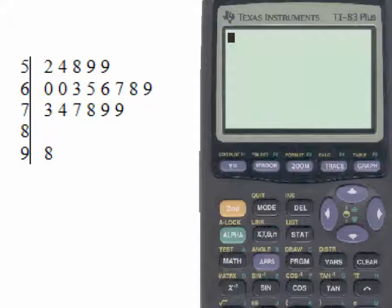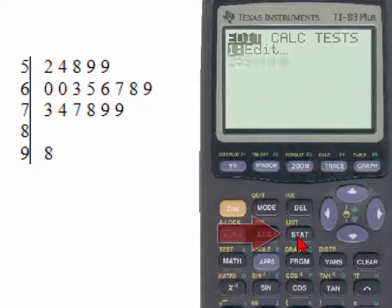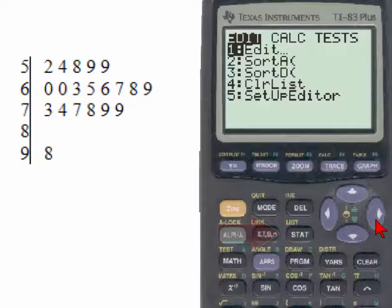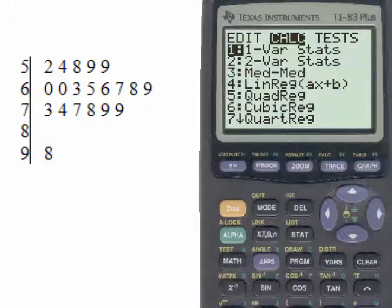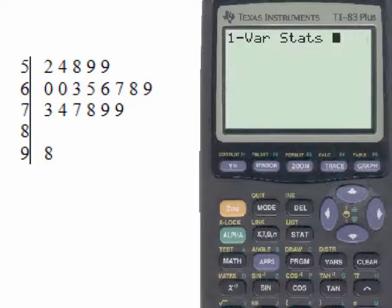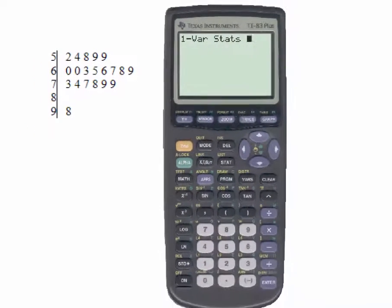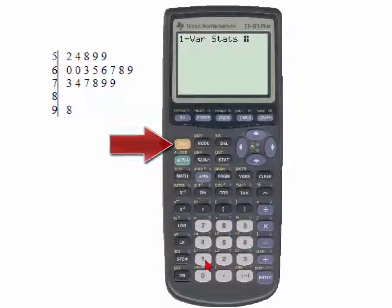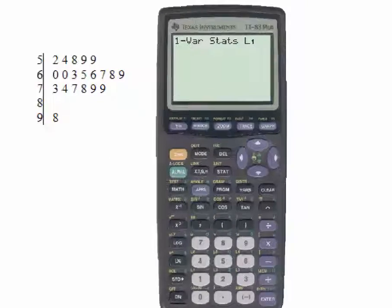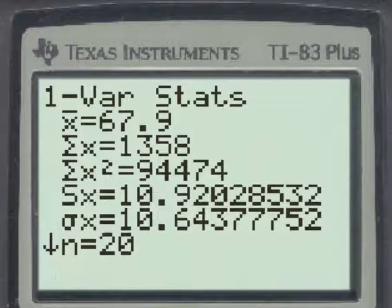Here we are on the home screen. We'll look at the values for the mean, the median, the standard deviation by going to the stat key and then to the calculate menu and selecting option number one by either hitting number one or the enter key. Since our data is in list one, we'll use the yellow key and the number one to type L1.